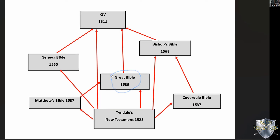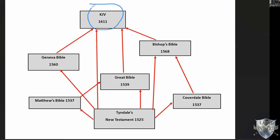We've also looked at the Geneva Bible, which many of you find very interesting, in 1560 — influenced by Tyndale. And one we're going to look at in the future is the Bishop's Bible in 1568, which had influence from Tyndale's New Testament and the Coverdale Bible. And all of these have had some or great influence upon the Bible we know today as the King James Version, first published in 1611.